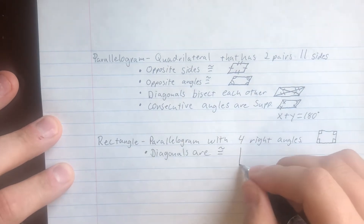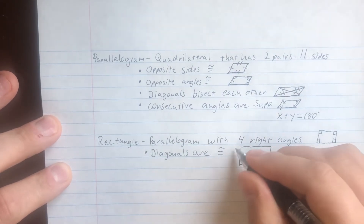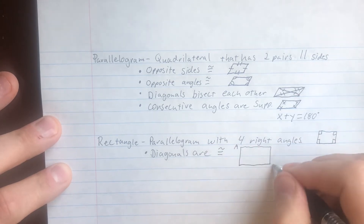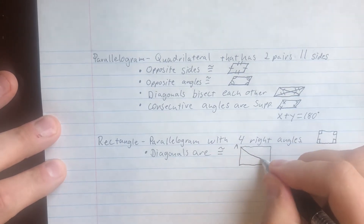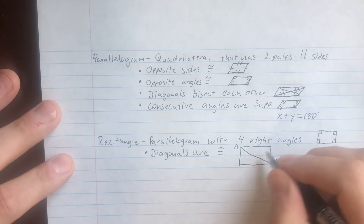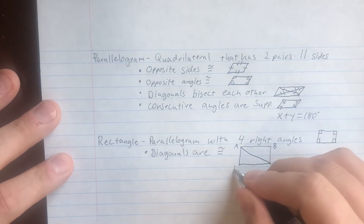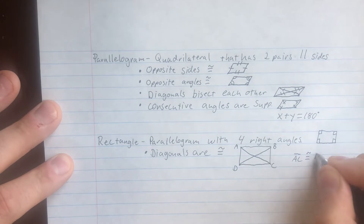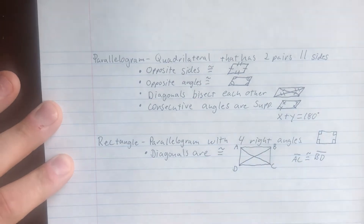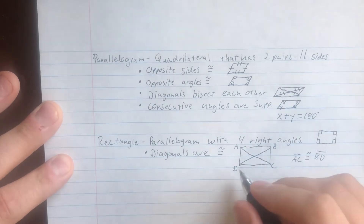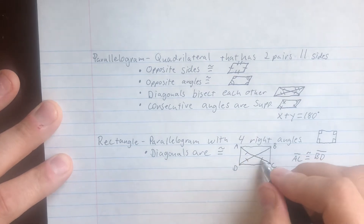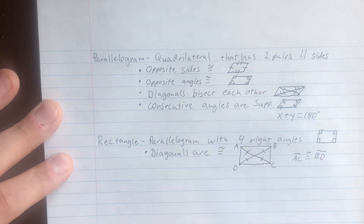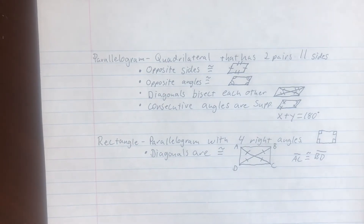Drawing this a little bigger: the distance from A to C is the same as the distance from B to C. And since it's also a parallelogram, the diagonals are also bisected — so all four of those little segments have the same length. That's really the only extra characteristic we have for a rectangle.